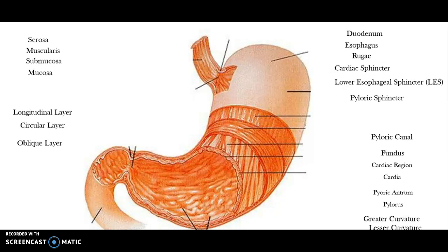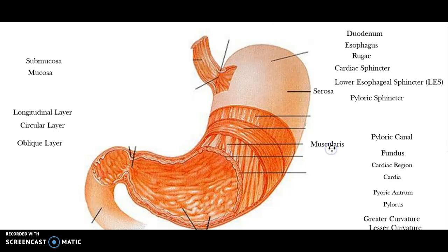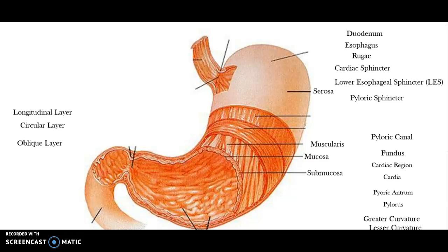Let's take a look at the structure of the stomach. Like all other areas of the alimentary canal, the stomach consists of four major layers. The outside layer is called the serosa. Then we have the muscularis layer — the stomach actually has three layers of muscle, which not all areas of the alimentary canal have. Then we have the submucosa, which is that vascular layer that helps provide blood flow to the mucosa. The most inner lining is called the mucosa. The submucosa is filled with blood vessels that nourish the mucosa.